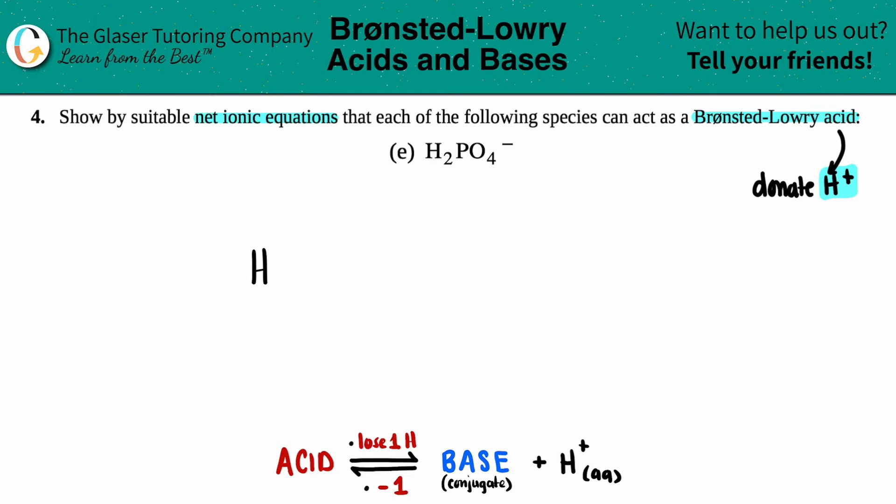We have the acid H2PO4 minus. And since it's a net ionic equation, we do have to include those states and all acids and bases are going to be aqueous, especially if you have a charge also that's aqueous as well.